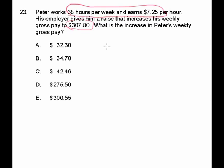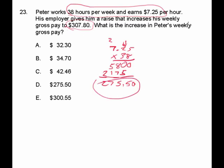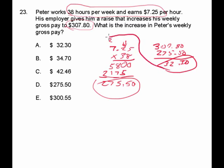So if we take $7.25 per hour multiplied by 38 hours, multiplying that out we get $275.50. And if I subtract that from the new gross pay of course I'll get the difference in gross pay, which is $32.30.